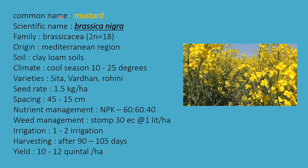The next oil crop is mustard. Scientific name is Brassica nigra, family Brassicaceae. Chromosome number 2n = 18, origin Mediterranean region. Clay loamy soils are best suitable. Climate is cool season, 10 to 25 degrees. Varieties are Sita, Vardhan, and Rohini. Seed rate is 1.5 kg per hectare, spacing 45 × 15 cm. Nutrient management NPK 60:60:40; phosphorus and potassium in basal doses. Weed management uses STOMP 30 EC at 1 liter per hectare.